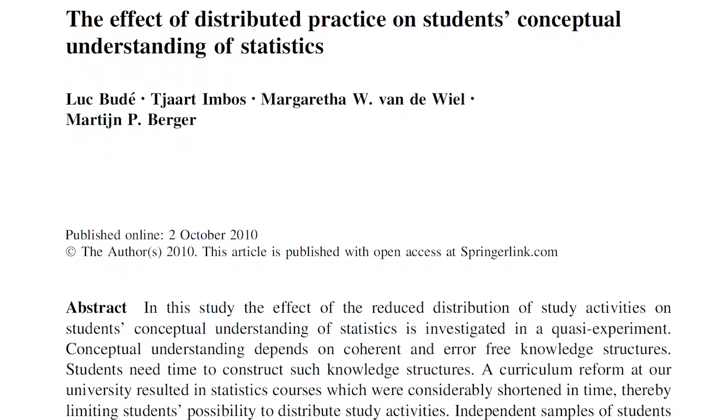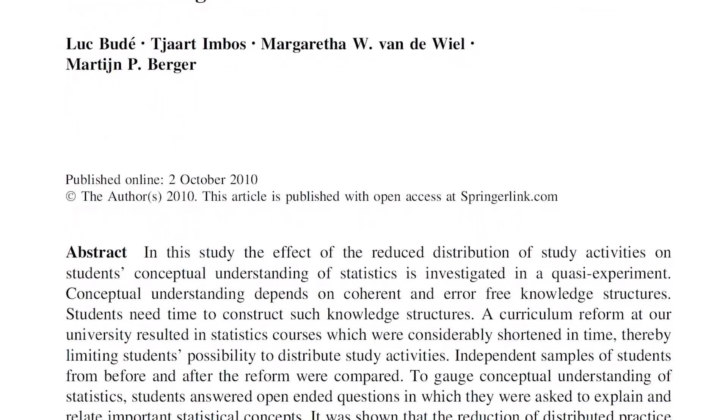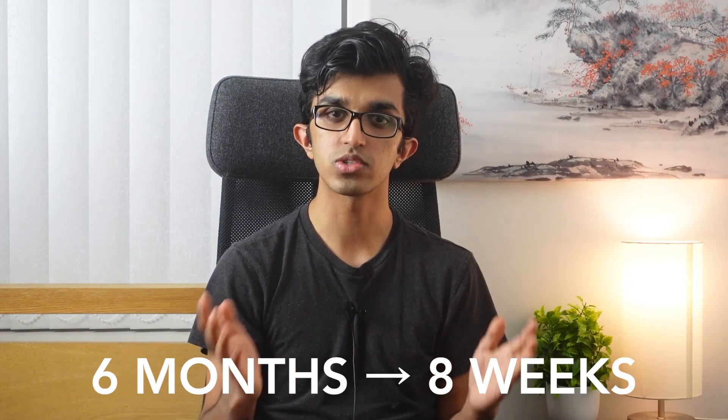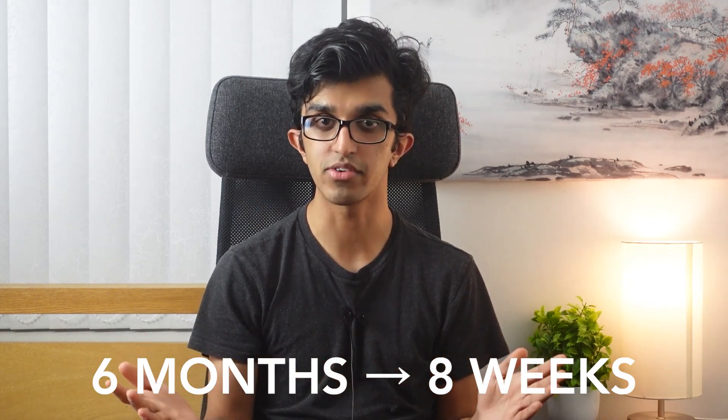Spaced repetition isn't just useful for memorising information like word pairs — it also extends to concepts. In a 2011 study, the authors took advantage of a curriculum change at their university statistics course when the course went from being taught over a six-month period to an eight-week period. This was significant because it limited students' ability to distribute their studies. Before and after the change, each cohort was asked open-ended questions requiring them to explain and relate concepts in statistics, and were awarded points based on their answers. They found that after the reform, when the course was made shorter and more intense, the cohort with the shorter course scored fewer points on this conceptual test.